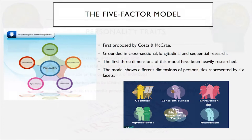This leads me to the five-factor model. I'd like to speak specifically about the first three dimensions of this model. It was first proposed by psychologists Paul Costa and Robert McRae. It's grounded in cross-sectional, longitudinal, and sequential research. The first three dimensions have been heavily researched by many psychologists. This model shows different dimensions of personalities, each represented by six facets that reflect the main characteristics associated with them.